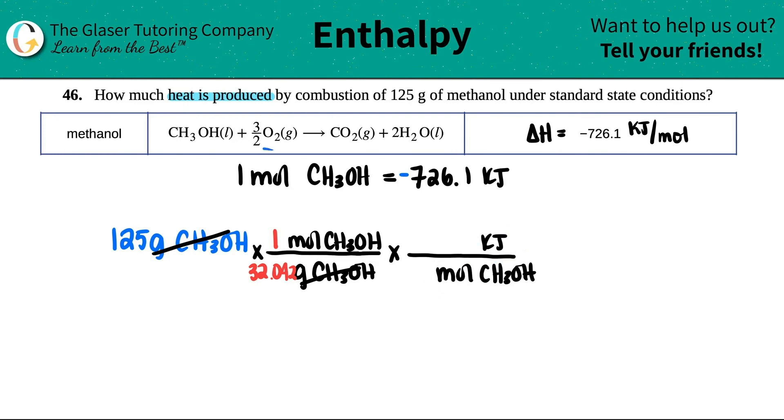That's this conversion. For every one mole, every one mole, right? When I use this, it's per mole. So there's one mole, right? And that's negative 726.1.